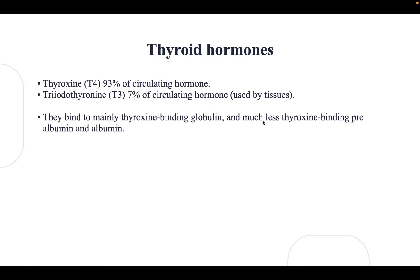We have two types of thyroid hormones. Thyroxine, also called T4, consists of 93% of circulating hormone. Tri-iodothyronine, or T3, is 7% of the circulating hormone and is the one used by the tissues. They bind mainly to thyroxine-binding globulin by 70%, and much less to thyroxine-binding prealbumin and albumin by 15%.